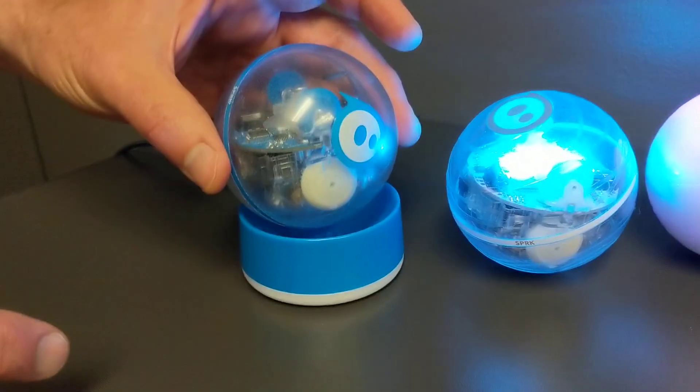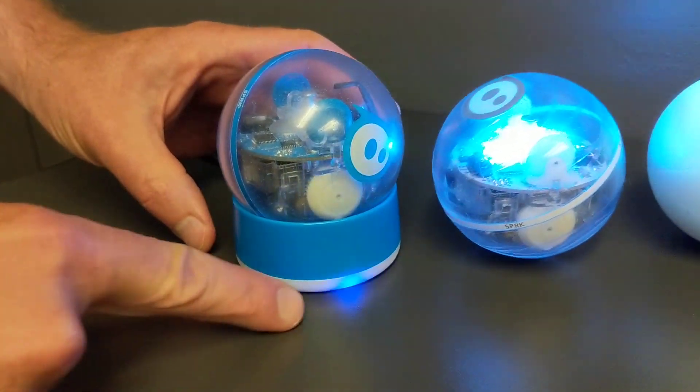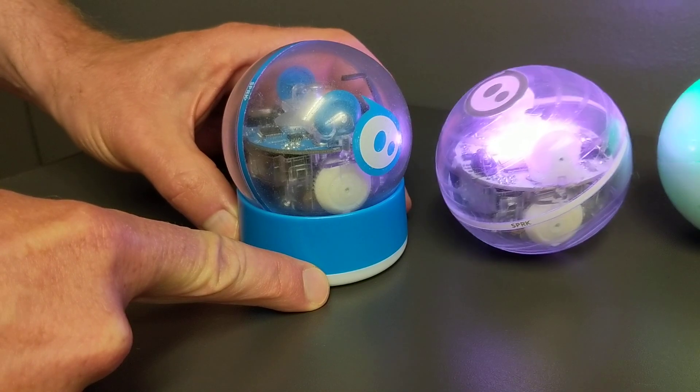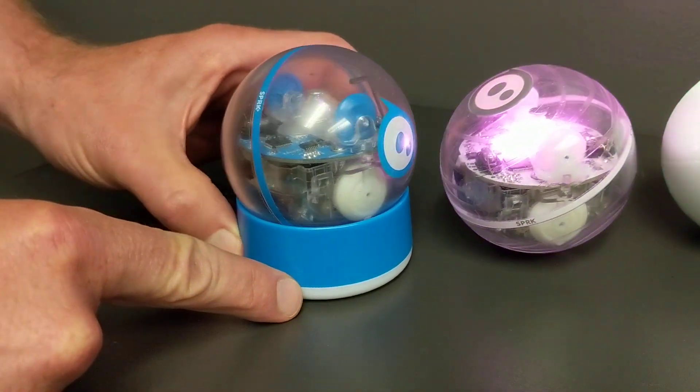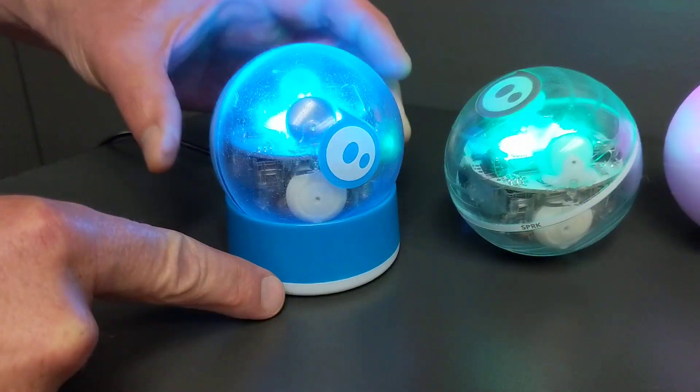Again, it will now show its colors. And finally, a Spark Plus, same process: wait for the blue light to flash, hold down the reset button, three seconds, and then release.